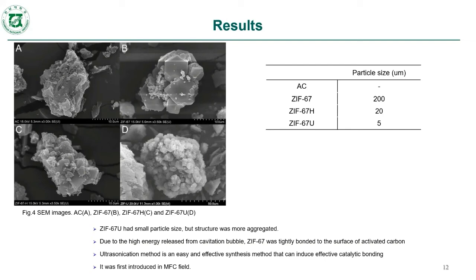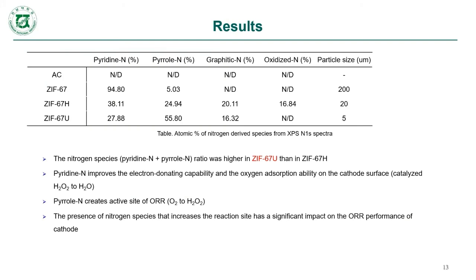From the table in this slide, the data related to the composition of the prepared materials is presented. The highest nitrogen species content was found in ZIF-67U compared to ZIF-67H.